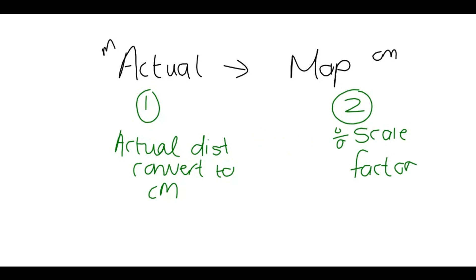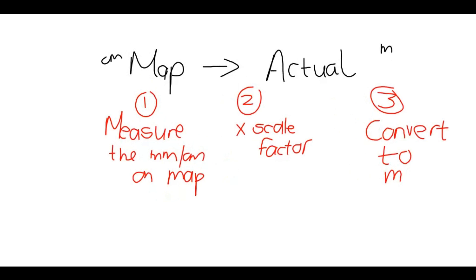Now note that, in short, when you're going to go from the actual distance to the map distance or the plan, you have to divide and the other way around, when you want to go from the map to the actual distance, you multiply with that scale factor and then you convert.